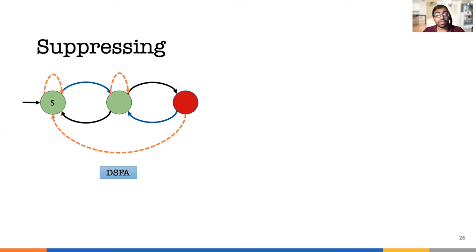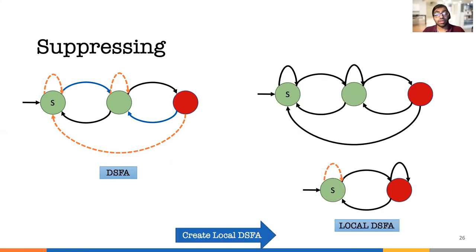Once we have the state machine with suppressed events, we take the DSFA and create the local DSFA for each location. This allows us to check invariants directly at the network function machine and hide events when it can prove they would otherwise be processed by a suppressible transition in the global machine. Once we have the DSFA and the local DSFA, they form the local and global verifier in our runtime system.